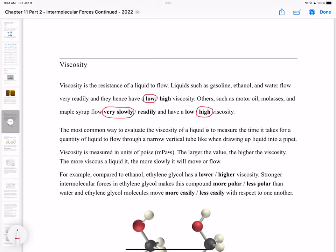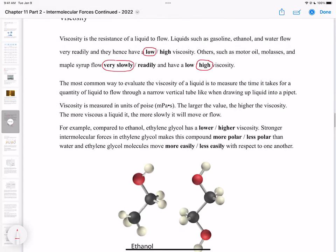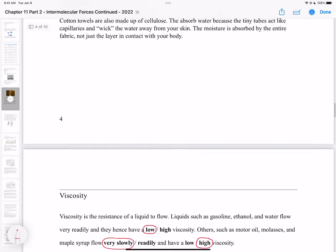The larger the value, the higher the viscosity, because it took longer to go through a narrow vertical tube. The more viscous a liquid, the more slowly it will move or flow. For example, compared to ethanol, ethylene glycol has a higher viscosity.